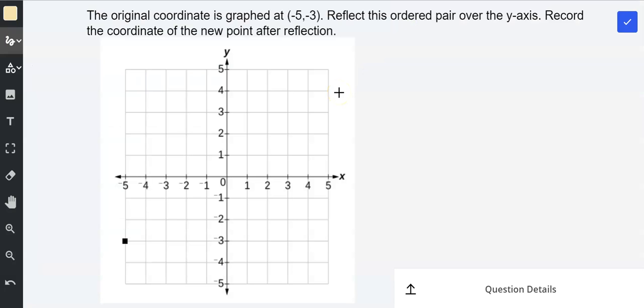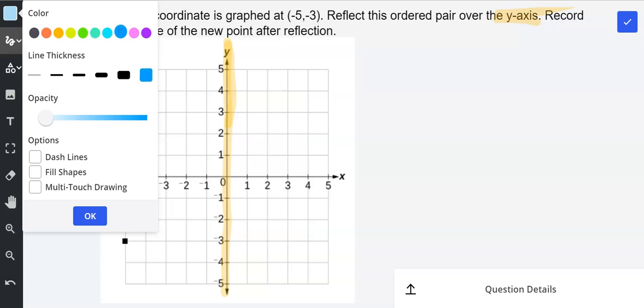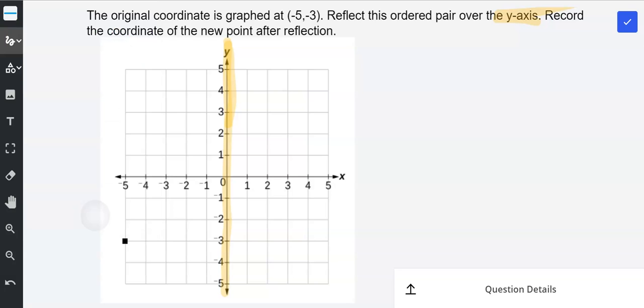The first thing I'm going to do is highlight the line of reflection, which is the y-axis. Then I'm going to choose a different color and count the distance between the ordered pair and the y-axis by moving towards the y-axis.